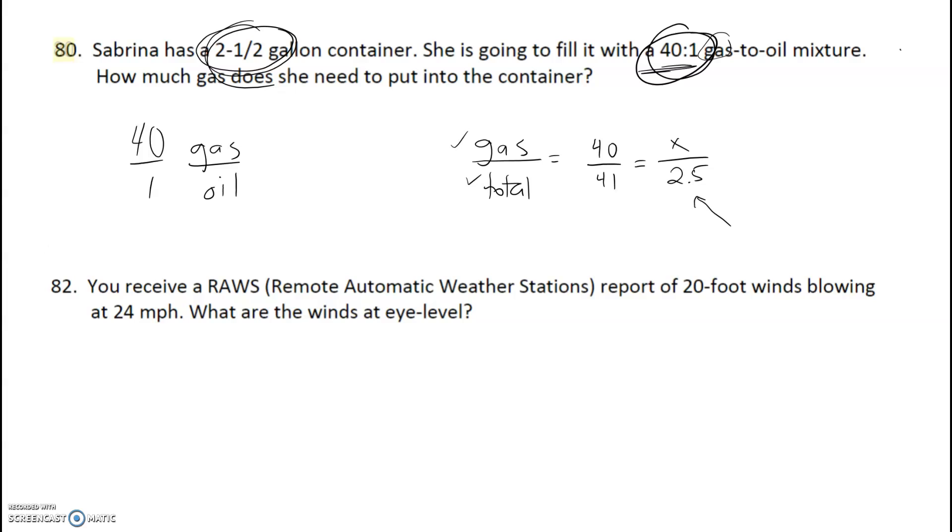If we solve this equation, that's what we should get. So I would cross multiply: 41x equals, and then I multiply 2.5 times 40, and that should be 100. Then we divide both sides by 41 to get our answer, and I got 2.439. And I think the direction said to round to two decimal places, so I got 2.44, and then we need our units, gallons.